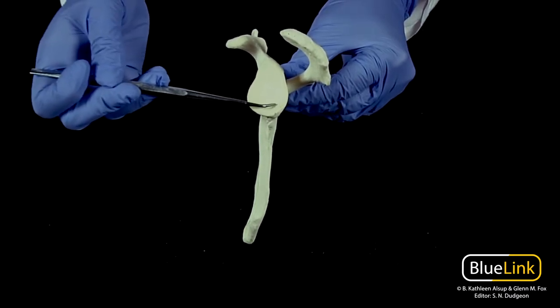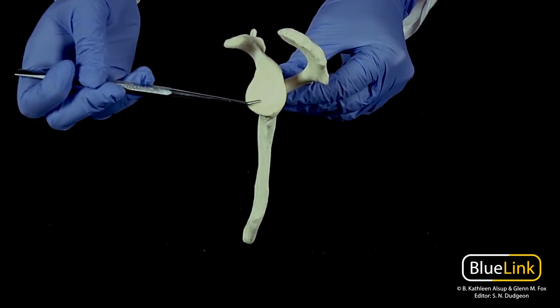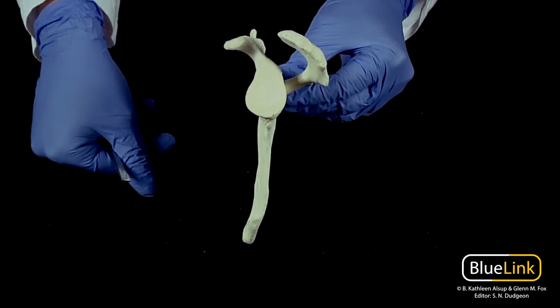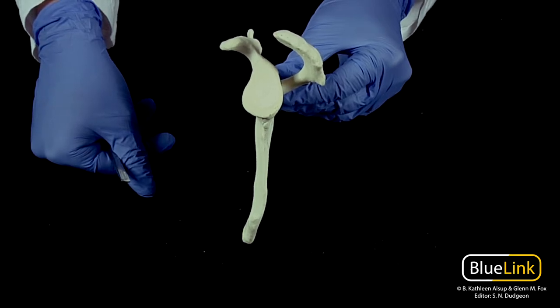And then you have this very prominent glenoid cavity. The glenoid cavity is what's going to articulate with the head of the humerus, forming the glenohumeral joint, which is your true shoulder joint.